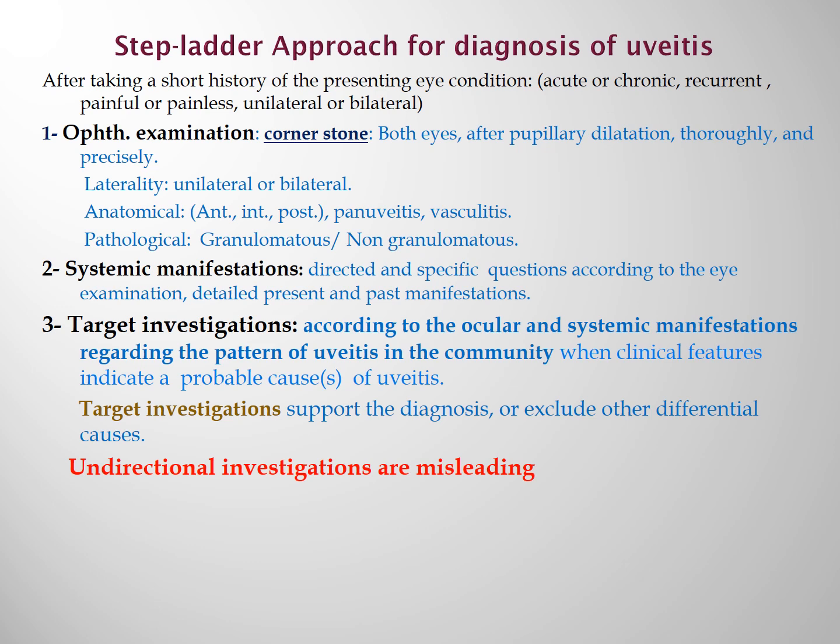Sometimes the diagnosis of uveitis can be concluded by this second step. But if the diagnosis is not reached, we go to the third step, which is target investigations. Investigations are selected according to the probable diagnosis suggested by ocular and systemic manifestations, regarding the pattern of uveitis in our community, to support the diagnosis or exclude other differential diagnoses. Undirected investigations are misleading.